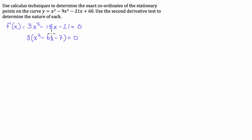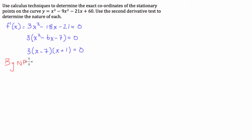We're going to factorize this quadratic so we can use the null factor law. We're looking for two numbers that multiply to give negative 7 and add to give negative 6. That gives us 3 times (x minus 7)(x plus 1) equals zero. By the null factor law, x equals 7 and x equals negative 1.